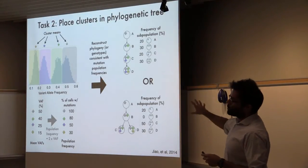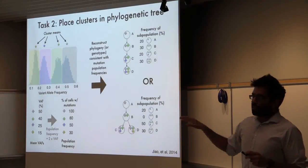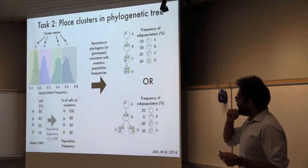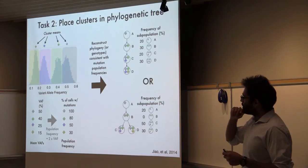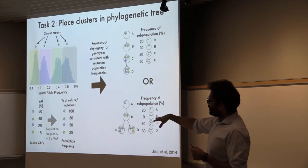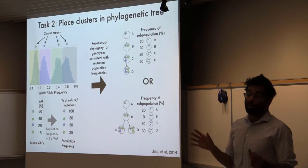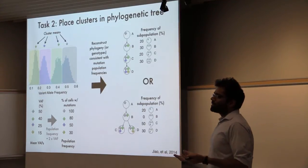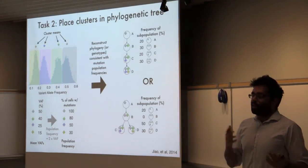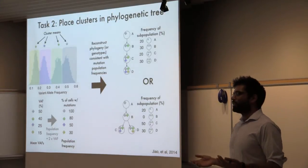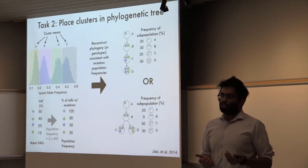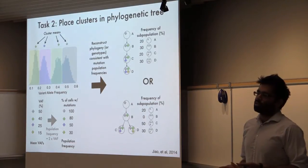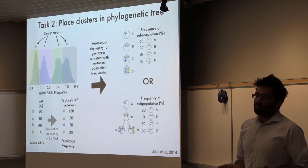This is an algorithm called PhyloSub that we published in 2014. It makes the assumption that there are no copy number changes, so you can just multiply by two. But that's not really a safe assumption to make in cancer — lots of tumors have lots of copy number changes, and that changes the relationship between variant allele frequency and the proportion of cells that contain that mutation.